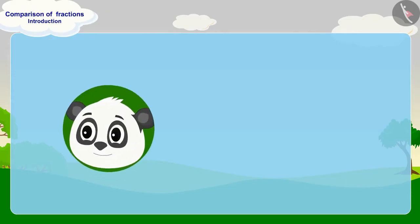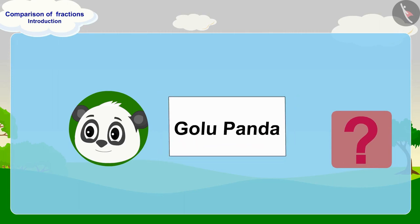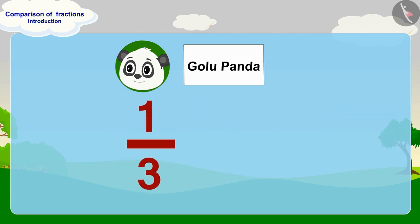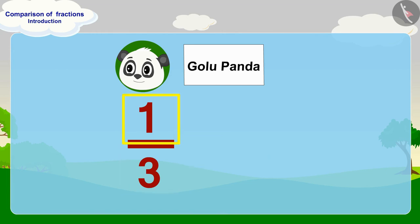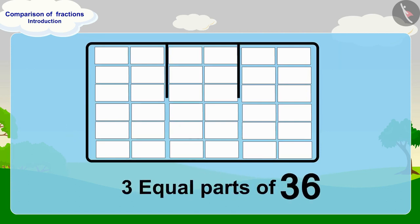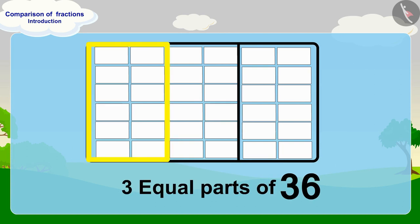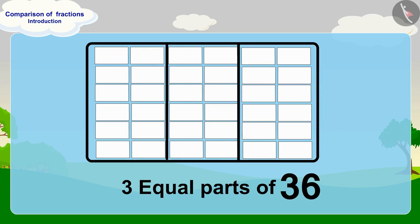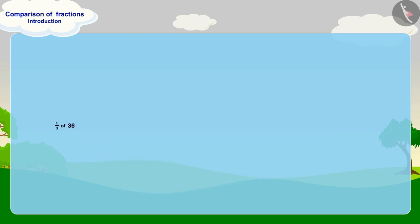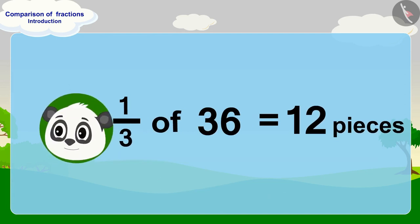Let's first find out how many pieces of paper Golu has written his name on. Golu's name is written on one-third part of 36. Here, three tells us how many equal parts to divide our whole into, and one indicates that out of three parts we have to take one part. If we make three equal parts of 36, then there will be 12 pieces in each part — 36 divided by 3 equals 12. So one-third of 36 is 12. Golu wrote his name on 12 pieces of paper.